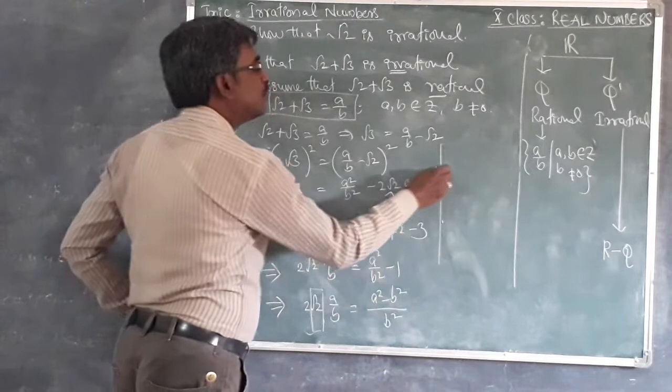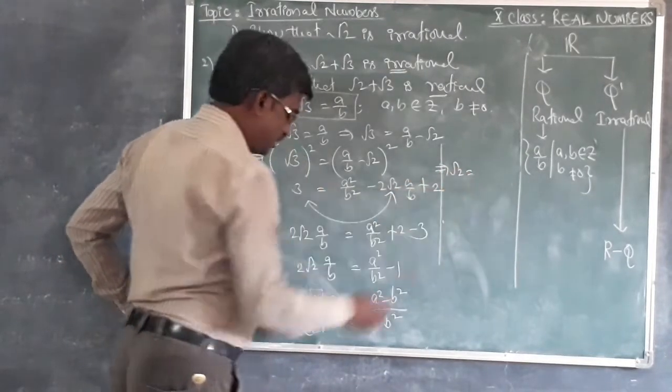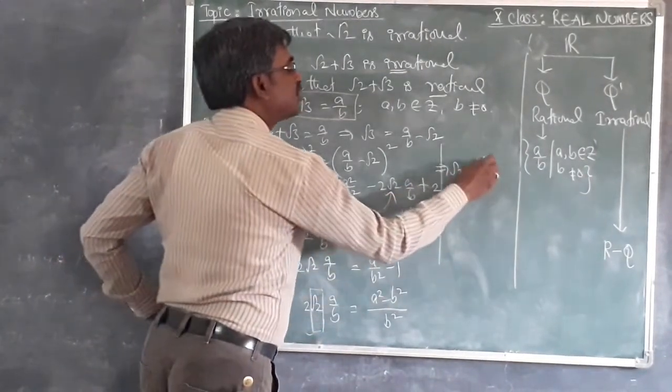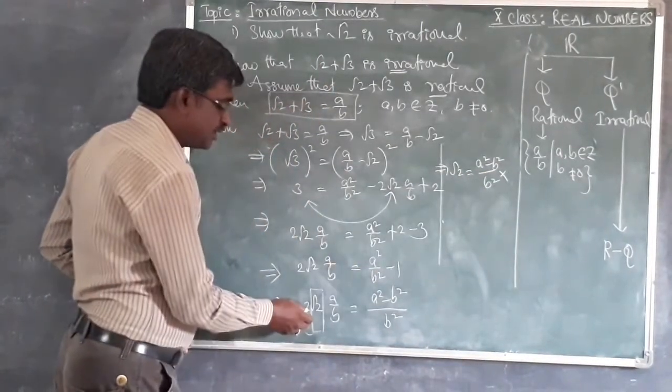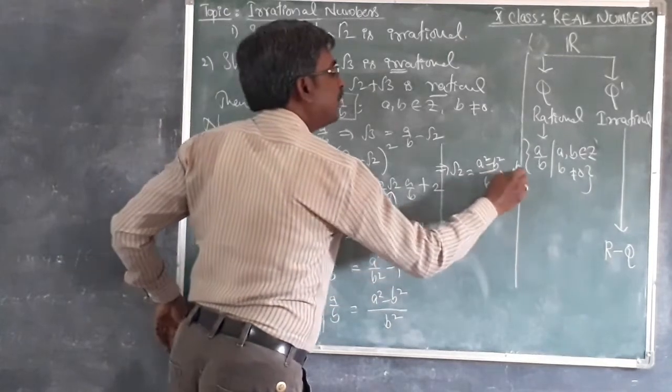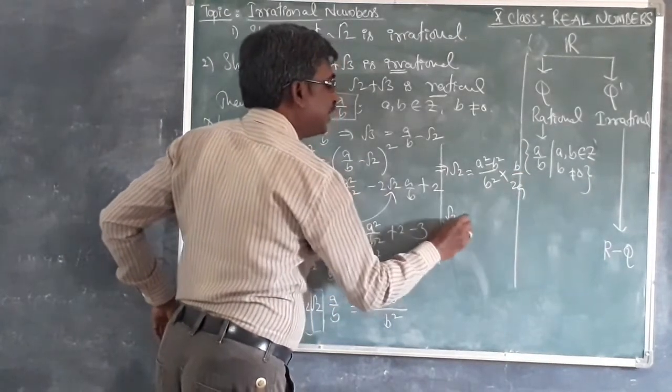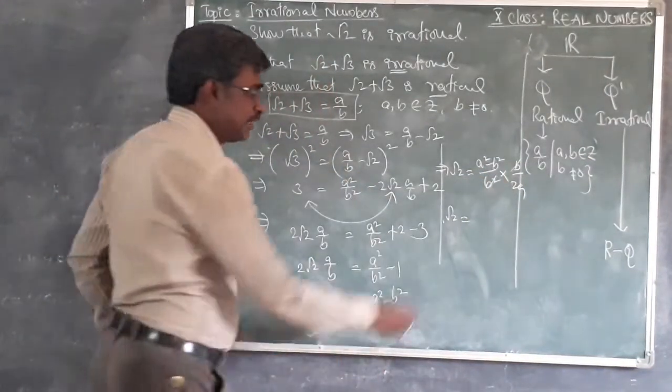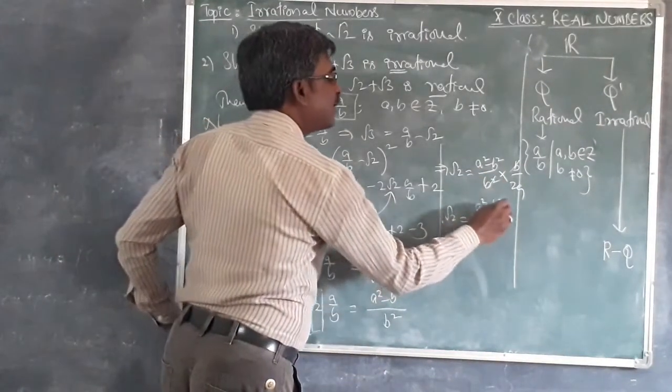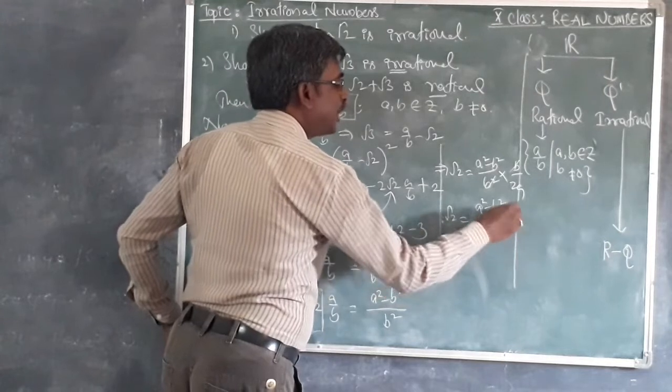That means this implies root 2 is equal to A square minus B square by B square into this 2A by B becomes B by 2B. So finally root 2 equal to A square minus B square by 2A.